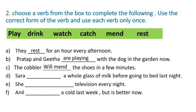Sarah drank a whole glass of milk before going to bed last night. What is the right answer? Drink. What is the past tense for drink? Children — drink becomes drank. Sarah drank a whole glass of milk before going to bed last night. She watches television every night — the right answer is watch.